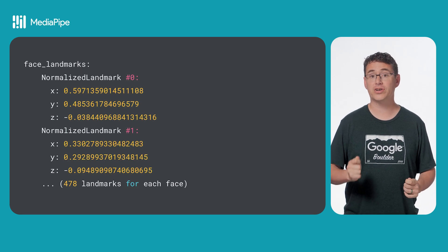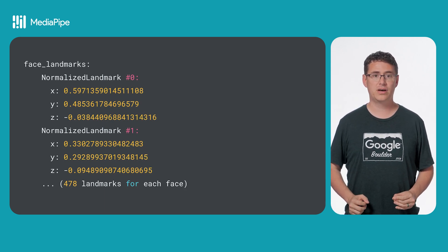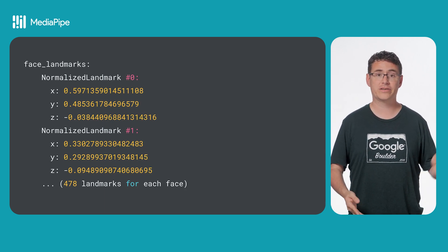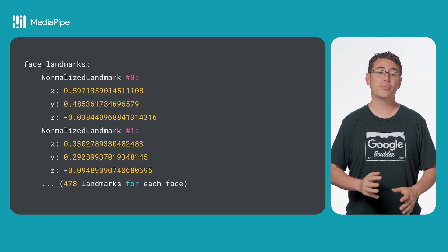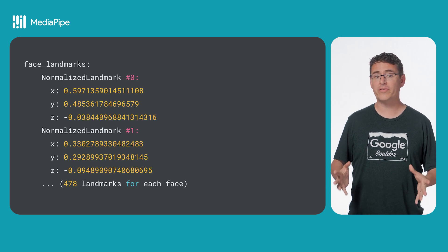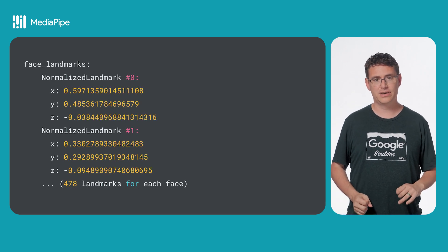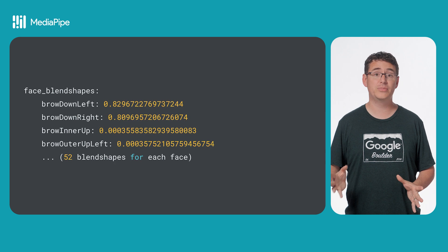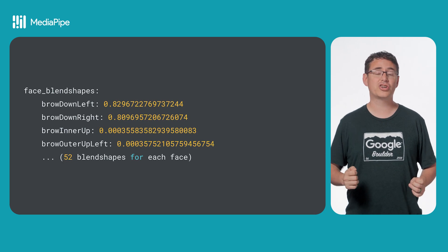To help you get the most out of this task, it's really useful to understand what the result object looks like. It contains a list of 478 face landmarks that each have their own X, Y, and Z coordinates based on the input image. The X and Y coordinates are normalized from 0.0 to 1.0 and match up to each landmark's point in the original inference image. The Z axis represents the landmark's depth relative to the center point on the face, with smaller values being closer to the camera, scaling roughly to the same scale as the X axis. This is also where you'll find the blend shape values, with each value in the result array representing the blend shape and its confidence score.